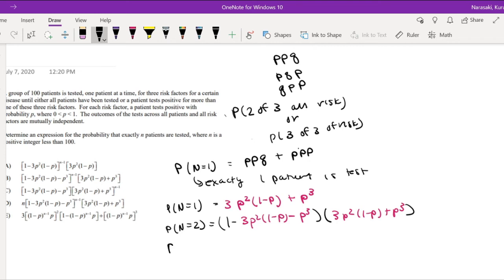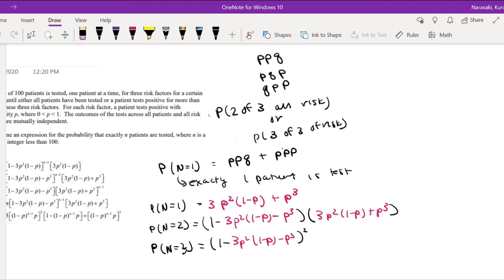So let's just try it for the third one. I hope you guys start to see the pattern. For the third one, the first two has to be none of the risk factors or one of the risk factors. So that's just, again, 1 minus the complement, which is 1 minus 3P squared, 1 minus P, minus P cubed. But then this time, this is going to be to the second power. So the first two patients can't fulfill the requirement. And then the third patient is exactly the one that gets 3P squared, 1 minus P, plus P cubed.